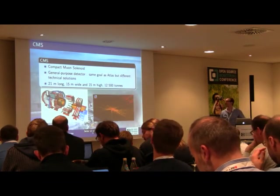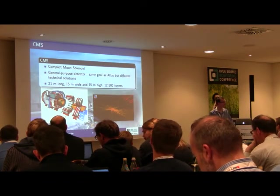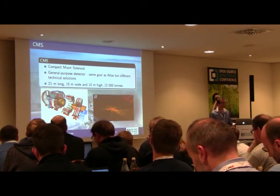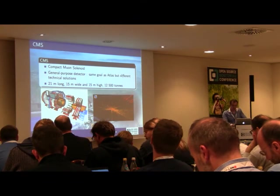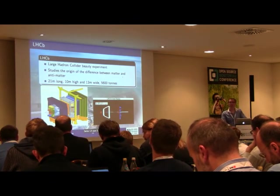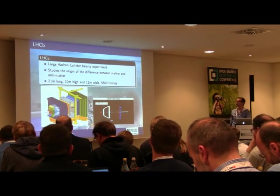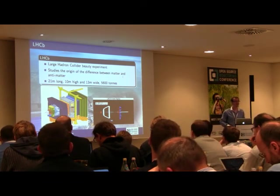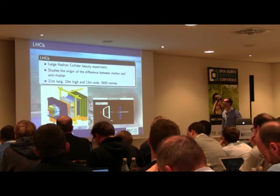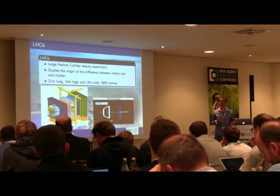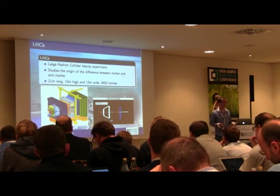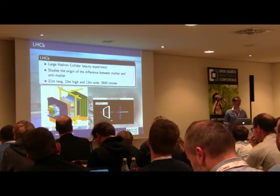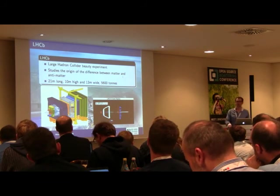CMS is the second famous general-purpose detector. It is looking at exactly the same things as ATLAS but using different technical solutions. Finally, we have the fourth experiment, LHCb, which is the experiment I work for. LHCb is the smallest of all four experiments but also the most precise. What LHCb is doing is trying to understand the origin of the difference between matter and antimatter, by looking at particles called beauty and charm.